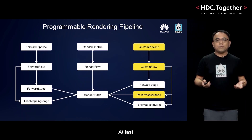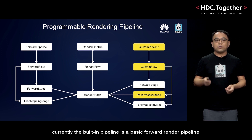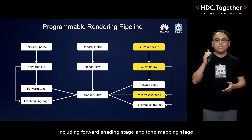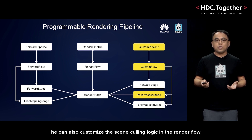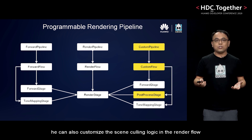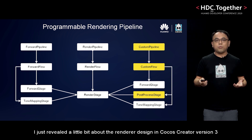The upper-level render pipeline is fully customizable. Currently the built-in pipeline is a basic forward render pipeline, including a forward shading stage and a tone mapping stage. The user can easily add a post-process stage and can also customize the scene-culling logic in the render flow. That covers a bit of the renderer design in COCOS Creator version 3, and I hope this can attract developers from all over the world to create great games.